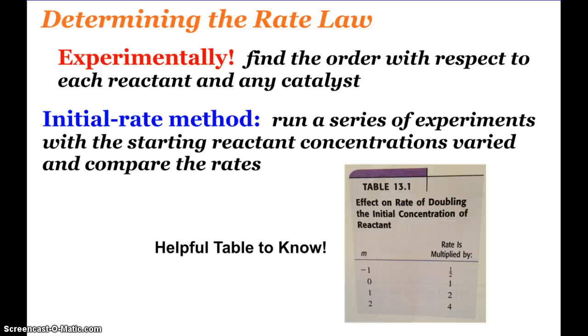Let's determine our rate law. This is done experimentally, so you have to be given experimental data. What we're doing is we're finding the order with respect to each reactant and any catalyst that might be present. A common way this is done is called the initial rate method, where you run a couple different experiments where you vary the starting reactant concentrations and then you compare the rates. This little table, table 13.1, is probably going to be helpful to know. It's a huge shortcut.